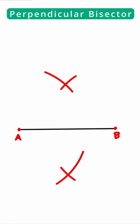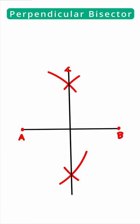Now that we have found those two intersections, we can connect the intersections. And now this line that we have created is our perpendicular bisector.